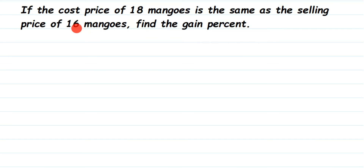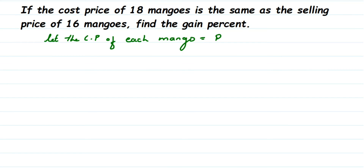In such cases, we make an assumption. Let the cost price of each mango be equal to 1 rupee. I'm taking 16 mangoes — not 18 — because the selling price also refers to 16 mangoes, making it easier to find profit. So the cost price of 16 mangoes will be 16 rupees.